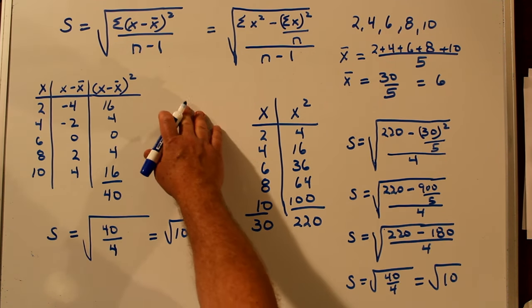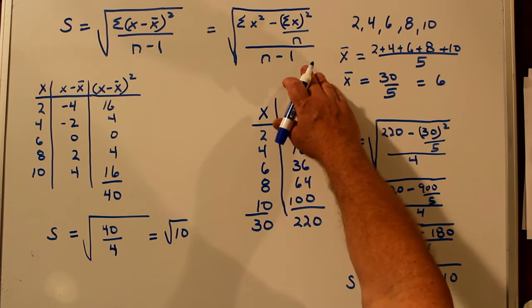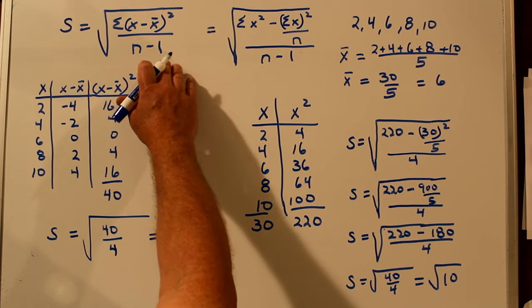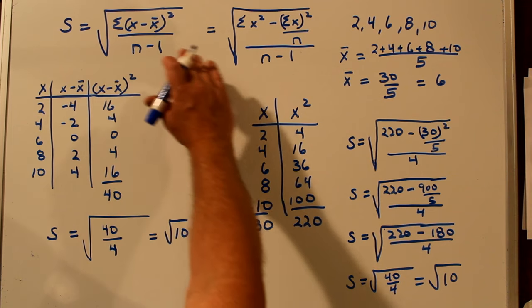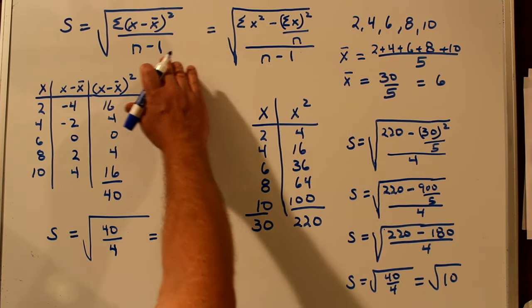So here's two formulas for the standard deviation. Both of them give us the square root of 10 for an answer for our group of numbers. And this one is called the shortcut method, although it's just simply an alternate method of finding the standard deviation of a sample. Notice it's n minus 1, and this only works for n minus 1. So it's a sample standard deviation.